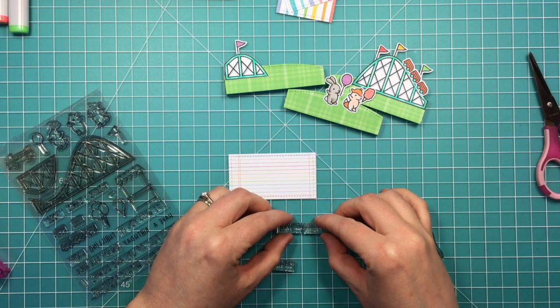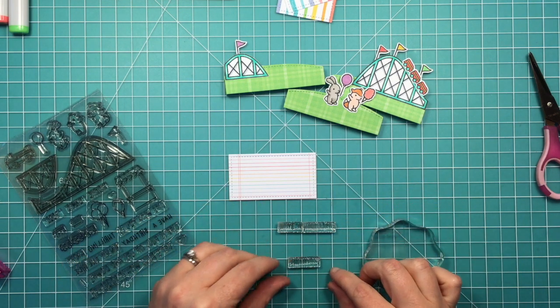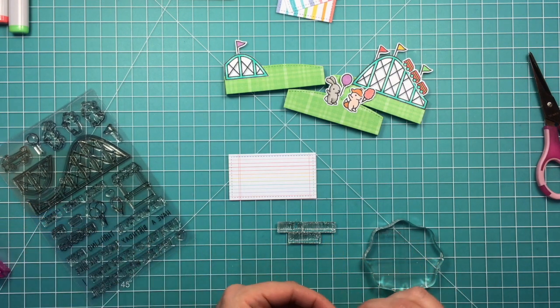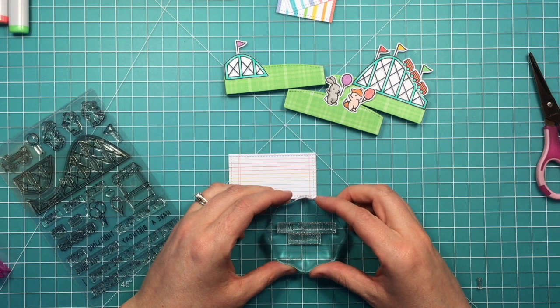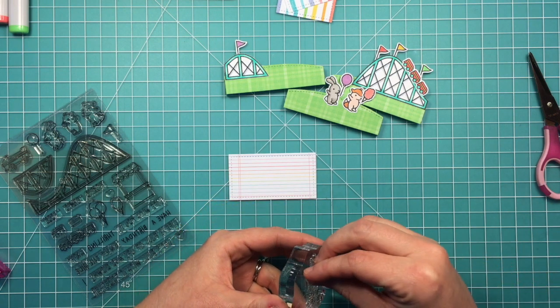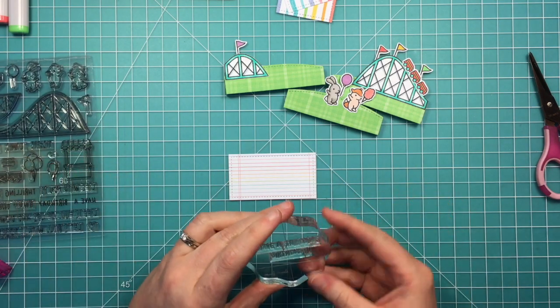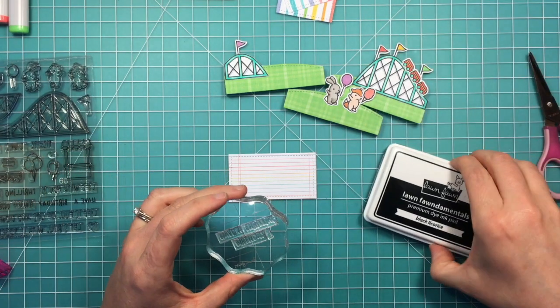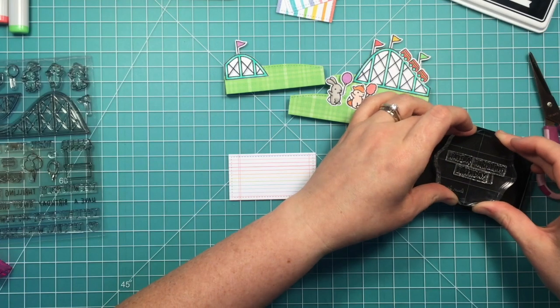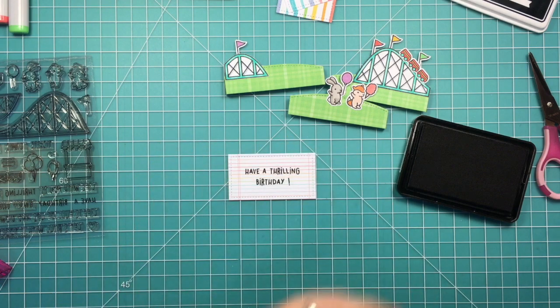Now to stamp out the sentiment that will go on the front panel. I'm just lining up the words to say have a thrilling birthday. I'm lining those up on my grid mat and then I will pick it up with the block. I pulled out the little exclamation point but it doesn't always lay flat on my mat to pick it up. So I'm just going to add it once I have the other stamps picked up. I'm stamping it in some black ink. The little lines of this piece of pattern paper will help me line up my sentiment nice and straight.